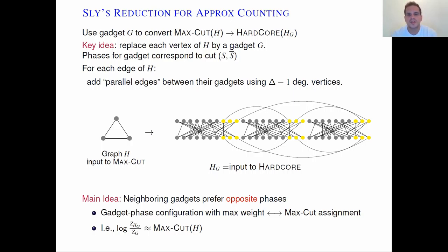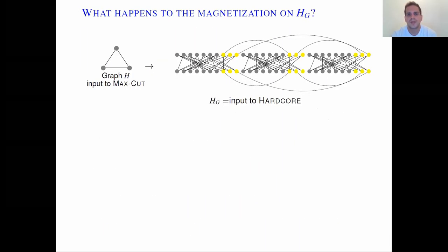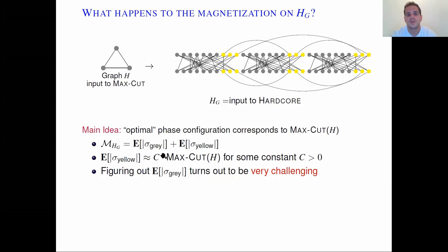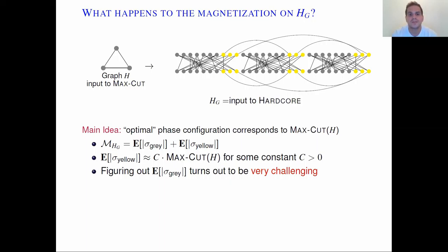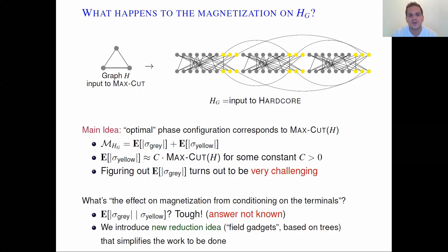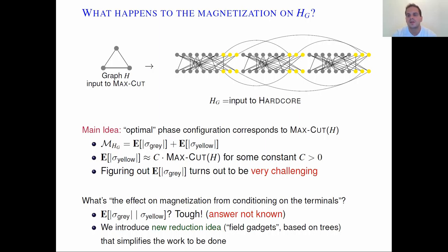Let's try to apply this approach for magnetization. By linearity of expectation, the magnetization splits into contributions from the gray main vertices and the yellow boundary vertices. The optimal phase configuration corresponds to MaxCut and shows up in the position of the yellow vertices. However, figuring out the contribution of gray vertices is very challenging — you need to condition on the yellow vertices, and understanding this conditioning effect on magnetization is a difficult open problem. That difficulty motivates our new reduction idea.